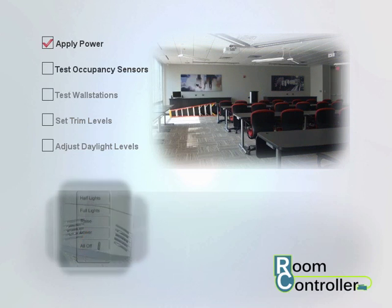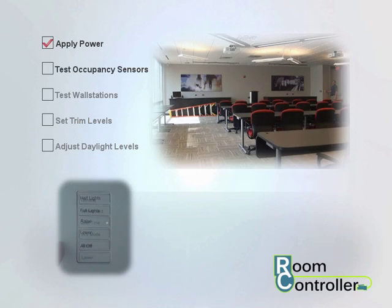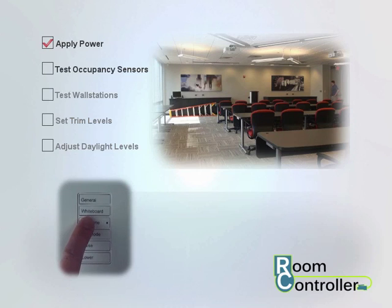If lighting is not already on, use the wall stations in the space to turn on all controlled lighting. For any stations with quiet time buttons, make sure that quiet time mode is deactivated and that the quiet time LED is off.